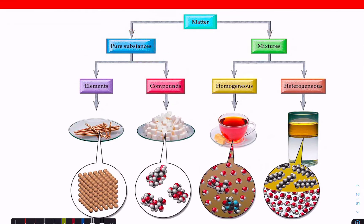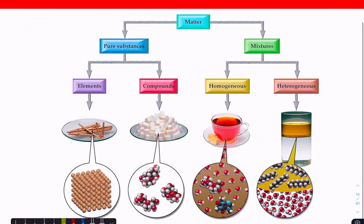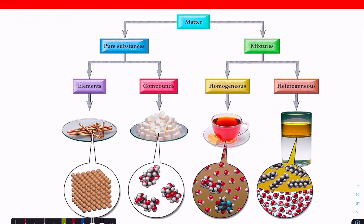Pure substances get further broken down into elements. Elements are the simplest form of anything — you can't break them down into smaller pieces or simpler elements. Compounds are made up of molecules that are all of the same type, and they contain fixed ratios of each of the different types of atoms that make up the molecules, which is different from mixtures. Mixtures contain either different elements or different compounds in varying proportions.